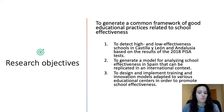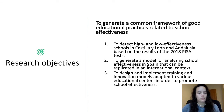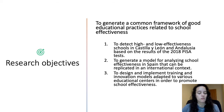To this end, we set three specific objectives: to detect high and low effectiveness schools in Castilla y León and Andalusia based on the results of the PISA tests; to generate a model for analyzing school effectiveness in Spain that can be replicated in an international context; and to design and implement training and innovation models adapted to various educational centers in order to promote school effectiveness.